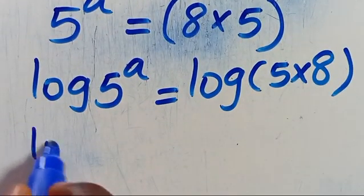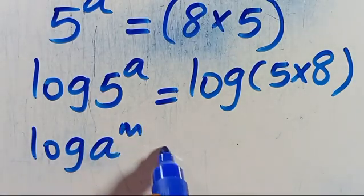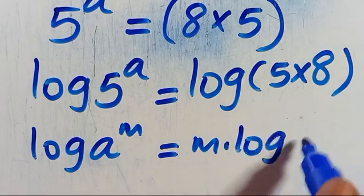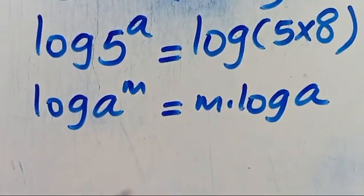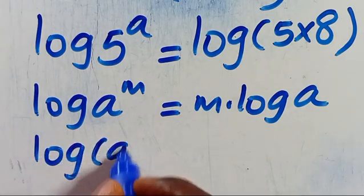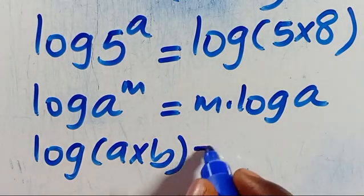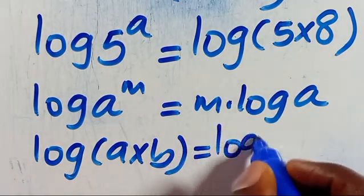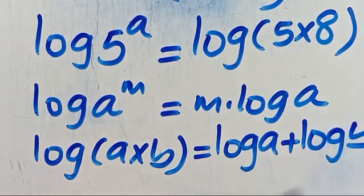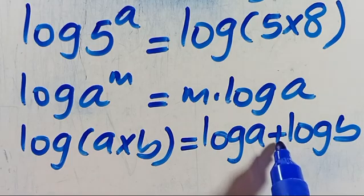Let's recall that when we have log of A to the power of M, this power M will come down to give us M multiplied by log A. And also when we have log of A times B in parentheses, this equals log A plus log B — the multiplication changes to addition.